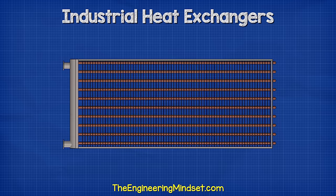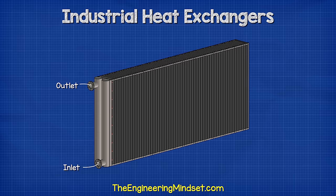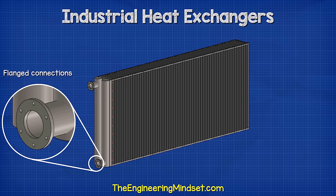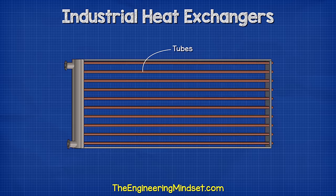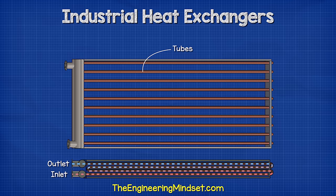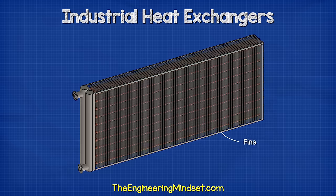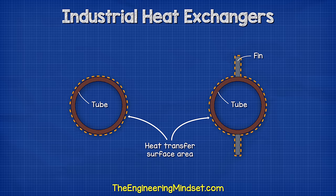A typical fin tube heat exchanger has an inlet and an outlet, both usually located on the same end. These connections are typically flanged, but they could be threaded or soldered depending on the application and working fluid pressures. Running between the inlet and outlet is a tube which contains and directs one of the working fluids — for example, hot water. The tubes are covered with many thin sheets of metal known as fins, which increase the surface area of the tube wall, allowing more heat to transfer.